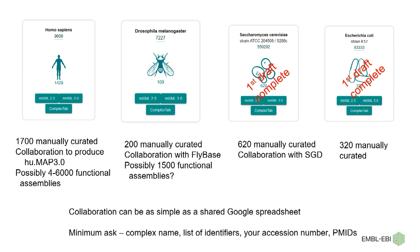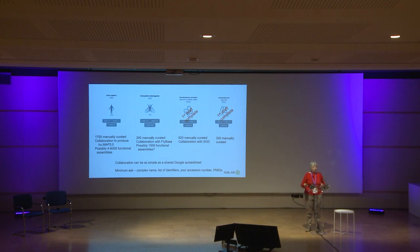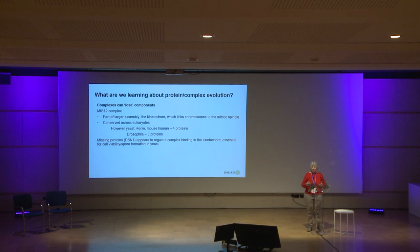Collaboration can be as simple as a Google spreadsheet. Those of you working on particular model organisms or an area of biology and generating these complexes — if you just contact me or someone at the Complex Portal, we'll set up a shared area where you can dump in a list of accession numbers, a name, some PubMed IDs, and we'll turn it into a Complex Portal entry, adding all the additional cross-references — crystal data, Reactome links if it's human, disease associations. We'll generate the stable accession number for you, and immediately it'll link into UniProt.